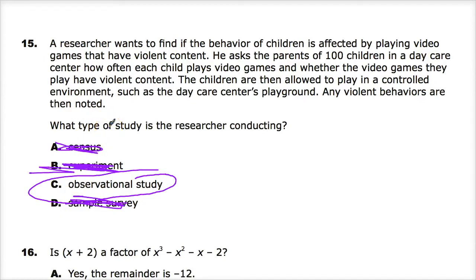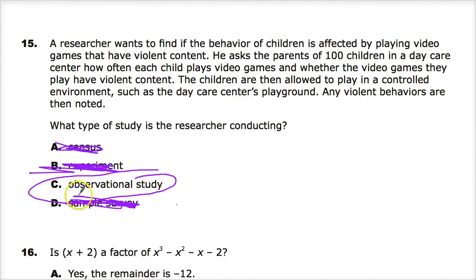To make a census, he'd have to have all kids involved. If he wanted it to be an experiment, he'd have to control the input groups before he started his research — he'd define specifically who is the control group who don't watch video games, changing something that wouldn't happen naturally. In an observational study, he lets things go as they normally would and just takes the results and compares them. In a sample survey, the difference is he would be less actively involved, collecting data provided to him by the sample. Because he's actually measuring children's behavior, he's doing an observational study here.